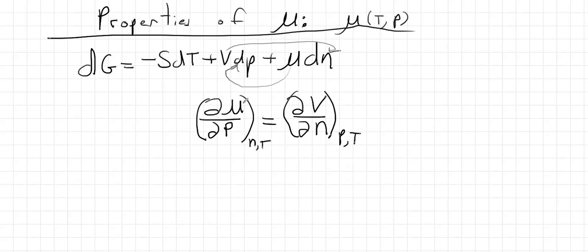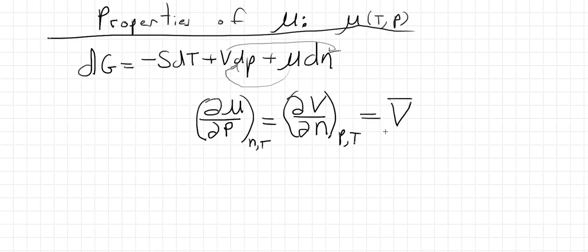This says the slope — how rapidly the chemical potential varies with pressure — is equal to this derivative. For a single substance, this is units of volume over number of moles, which is meters cubed per mole. This is just the molar volume. So the molar volume is how rapidly chemical potential changes with pressure. Since the chemical potential is just the molar Gibbs function, this shouldn't be a surprise — the molar volume tells us how rapidly our chemical potential changes.